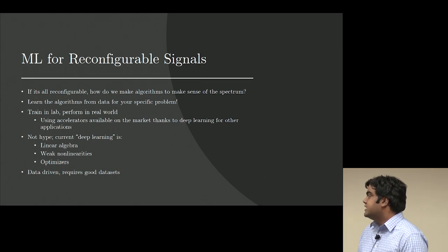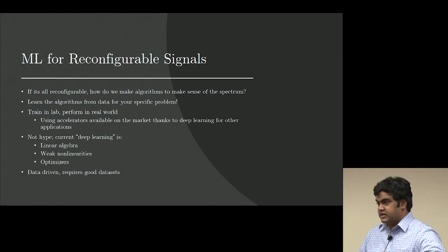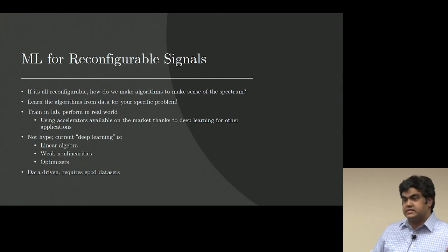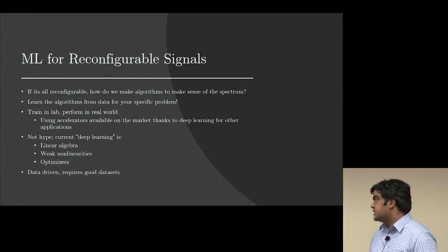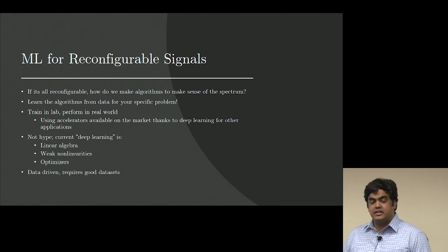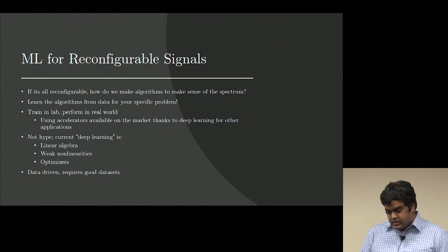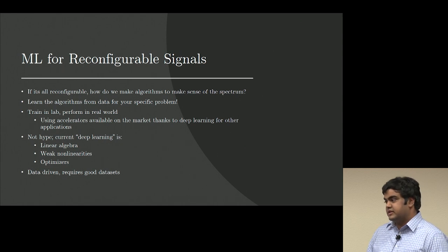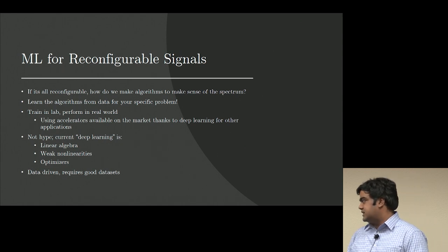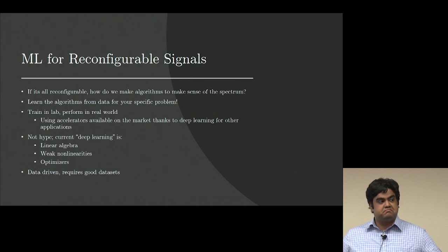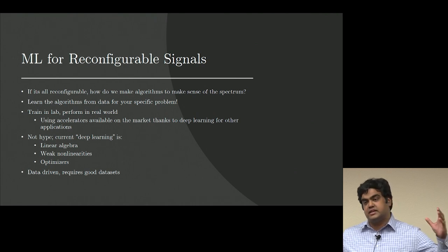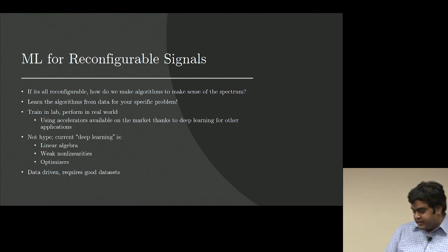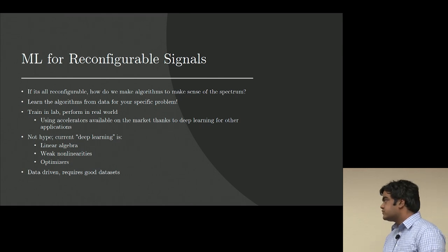You can learn the algorithms for your specific problem, train in the lab, and perform in the real world using the accelerator of your choice. And deep learning and machine learning are not really hype — when you dig down into it, it's just a bunch of linear algebra, matrix multiplies, weak nonlinearities, and optimizers. It's an algorithm by optimization — you let the optimizer discover the algorithm given some structure. It's data-driven and requires good data sets.